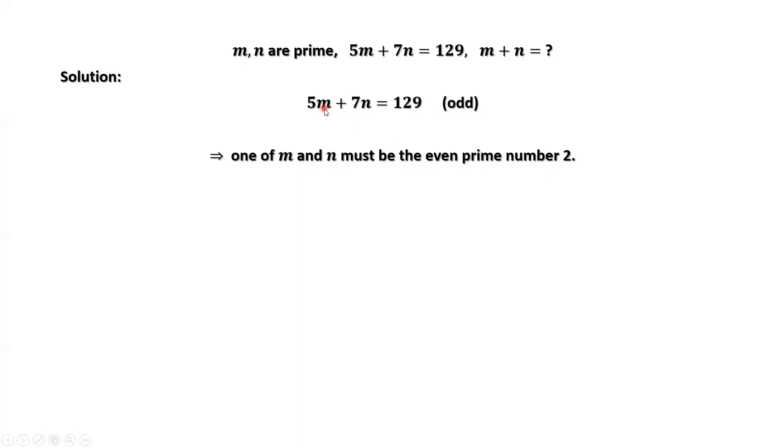What does this mean? At least one of m and n must be even. If both are odd numbers, 5 times an odd number is odd, 7 times an odd number is odd. Odd plus odd is even. But 129 is odd. Therefore, one of m and n must be even. Since m and n are prime numbers, this means at least one of m and n is 2. 2 is an even prime number.